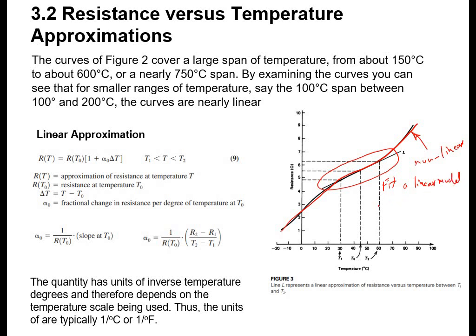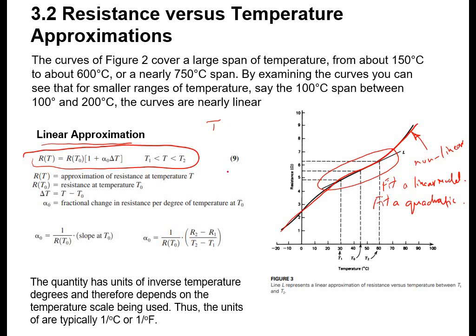However, a linear model will not be very accurate, or we can fit a quadratic model which will be more accurate. So we are going to have two equations — one for the linear and one for the quadratic. It depends on what I need to achieve. Talking about the linear approximation, the equation is R = RT0 · (1 + α0 · ΔT). R and T represent data points: T1, T2, T3, and R1, R2, R3, and so on.